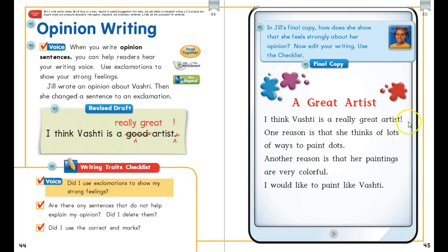We need to work on doing that in our own writing. Let's check out the checklist. Did you use exclamations to show strong feelings? We don't need every sentence to be an exclamation, but let's choose maybe one of our things that we would like to feel strongly about and show that in our writing by using an exclamation. Are there any sentences that don't help explain your opinion? Did you delete them? We want to make sure that our detailed sentences support our opinion. And then did you use the correct end marks or end punctuation?